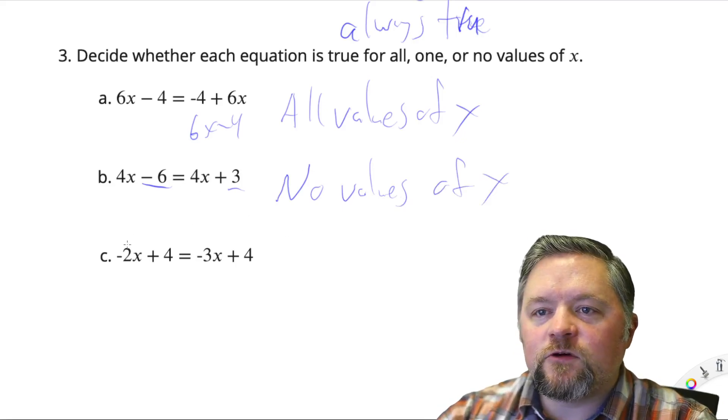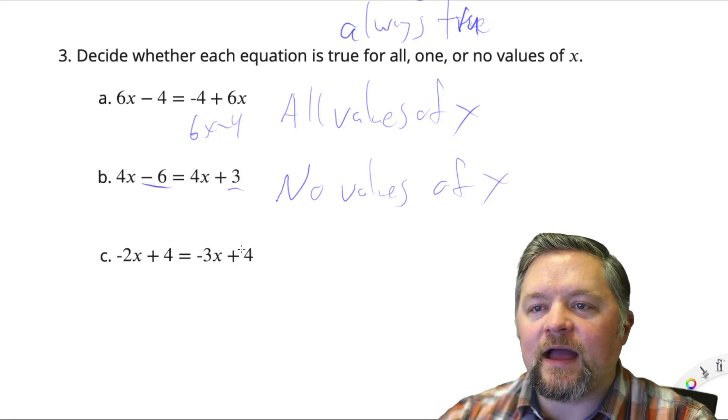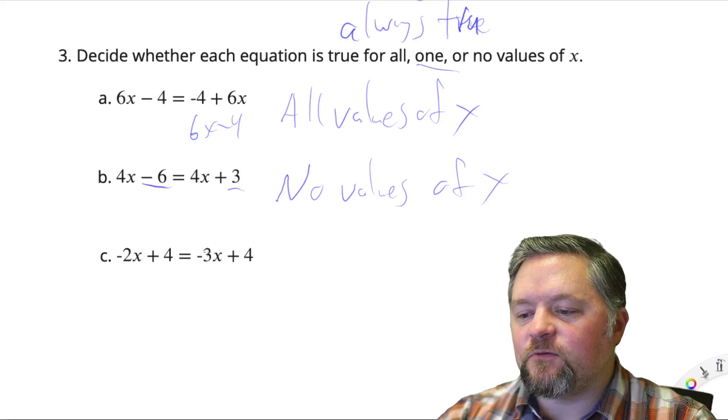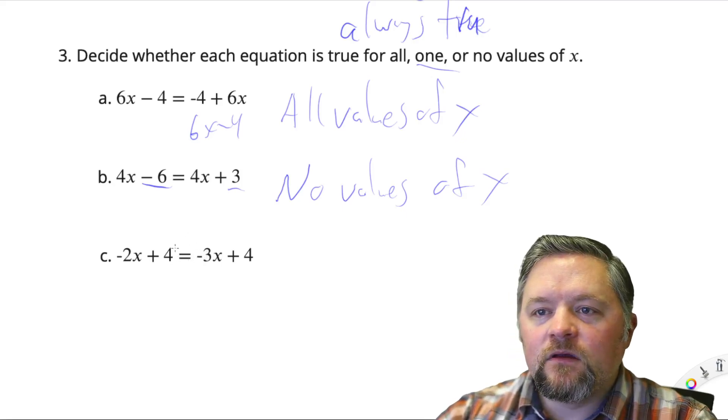And this bottom one, negative 2x, negative 3x, those do not match. That means it's probably true for one value. Let's try and solve it and see what we get.